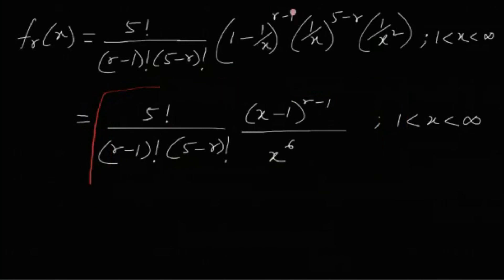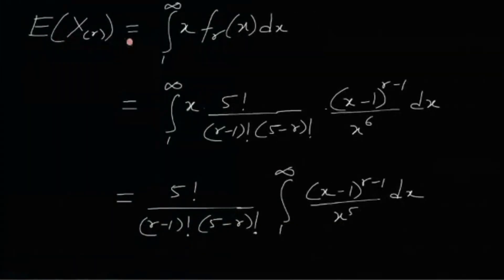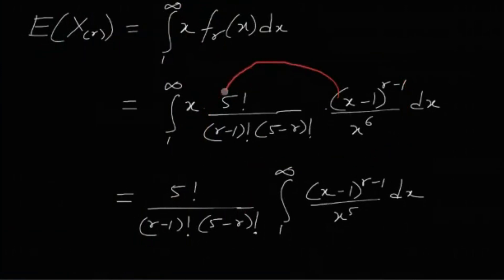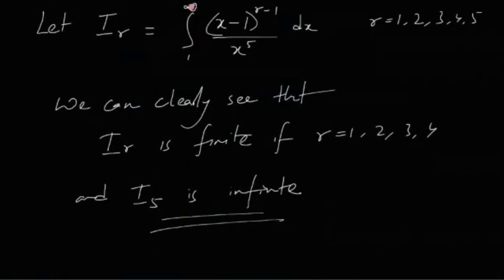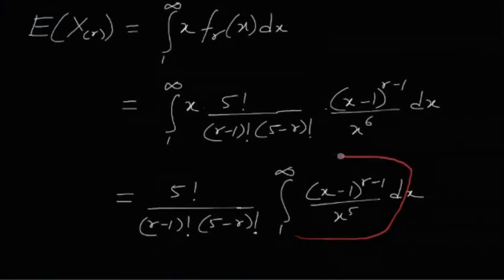We need to find those values of r for which the expectation of this distribution exists. E[X_(r)] = integral from 1 to infinity of x · f_r(x) dx. The constant part factors out, leaving us with the integral from 1 to infinity of (x−1)^(r−1) / x^5 dx. We need to find those values of r for which this integral is finite.